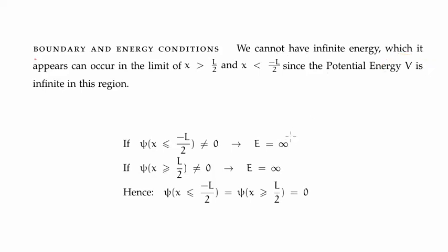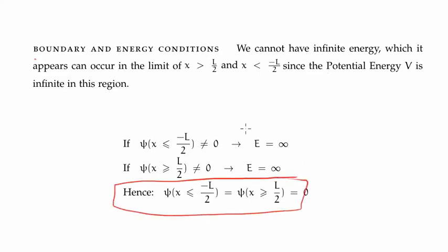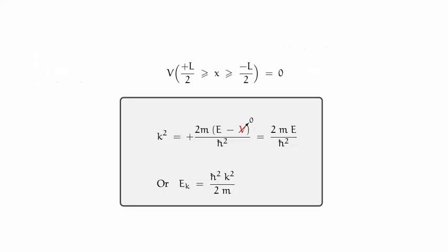This is mathematically represented by these two expressions here: the wave function must be zero if x is less than negative L over 2 or greater than positive L over 2, and this gives us our boundary conditions. The potential energy inside the well is zero, and plugging that into our expression for k squared we get k squared equals 2mE over h-bar squared.